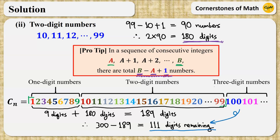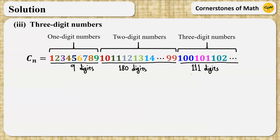They all come from 3-digit numbers. So we have 111 digits remaining, so we need 111 divided by 3, which is 37 numbers.